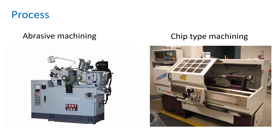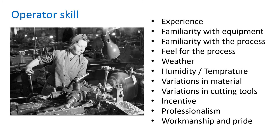Another factor determining precision is the process. Are we using abrasive machining or chip-type machining? Abrasive machining is advantageous when components have been heat-treated or hardened. What about operator skill? Putting an unskilled operator on a high-precision machine, or a skilled operator on a poor quality machine, both affect the outcome. Factors include: experience, familiarity with the equipment and process, feel for the process, weather, humidity, temperature, variations in material and cutting tools, incentive, professionalism, and workmanship. All these factors affect the quality and precision of a component.